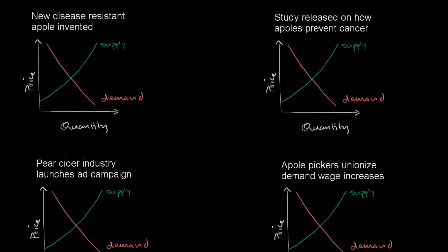What I want to do in this video is think about how supply and/or demand might change based on changes in some factors in the market, and then think about what that might do to the equilibrium price and equilibrium quantity. So let's say at some period this is what the supply curve looks like and this is what the demand curve looks like.